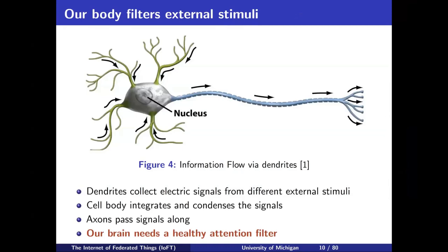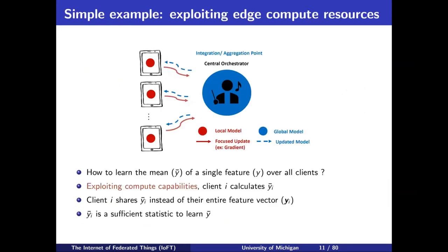I tend to give the analogy that this is how our body functions. We get a lot of external stimuli, and this is filtered before it goes to our central processing system — the brain. Many neurological disorders are based on the lack of ability to filter external stimuli before it reaches our central nervous system. To give a simple idea of decentralization with a central authority: if we have some computational power at the edge, and the central server just wants to learn a mean over features of all clients, instead of uploading our entire feature vector, we can just upload summary statistics, or just the mean. The mean is a sufficient statistic to learn the global mean.